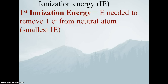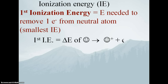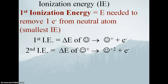The first ionization energy is the smallest of all the ionization energies of any particular atom — it's always going to be the easiest. It's the delta E associated with taking a neutral atom and turning it into a plus one ion plus one electron. The second ionization energy is defined as the energy required to take a positive one ion and turn it into a positive two ion. So the second ionization energy is not how much energy it takes to remove two electrons — it's how much energy it takes to remove the second electron after you've already removed the first.